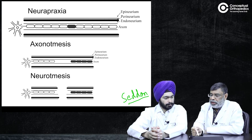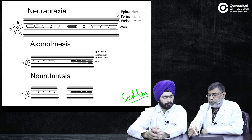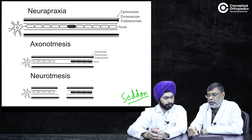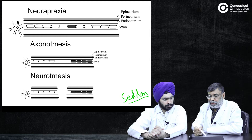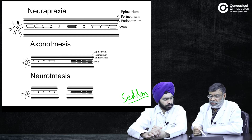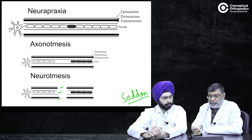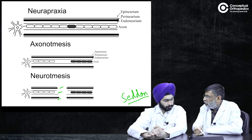Whereas in axonotmesis, the axon is damaged but the connective tissue coverings are still intact. And in neurotmesis, everything is gone — all coverings are also gone. But the problem here is that there can be different grades between these two: some covering is gone, some not gone. So this classification by Seddon was further revised by Sunderland, where axonotmesis could be of different types.